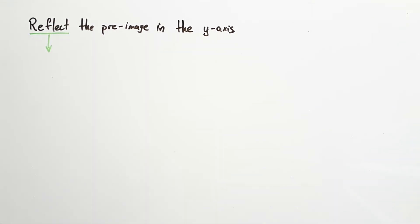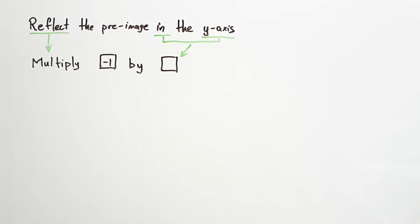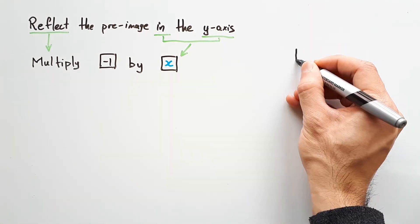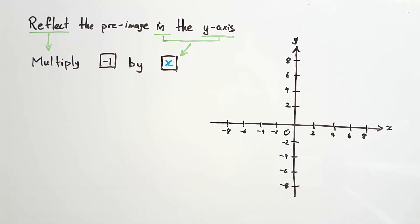In this case, reflect means to multiply negative 1 by something. In the y-axis means that something is the x-value. So we're multiplying all our x-values by negative 1. Change it for the endpoints, 4,6 and 6,8.